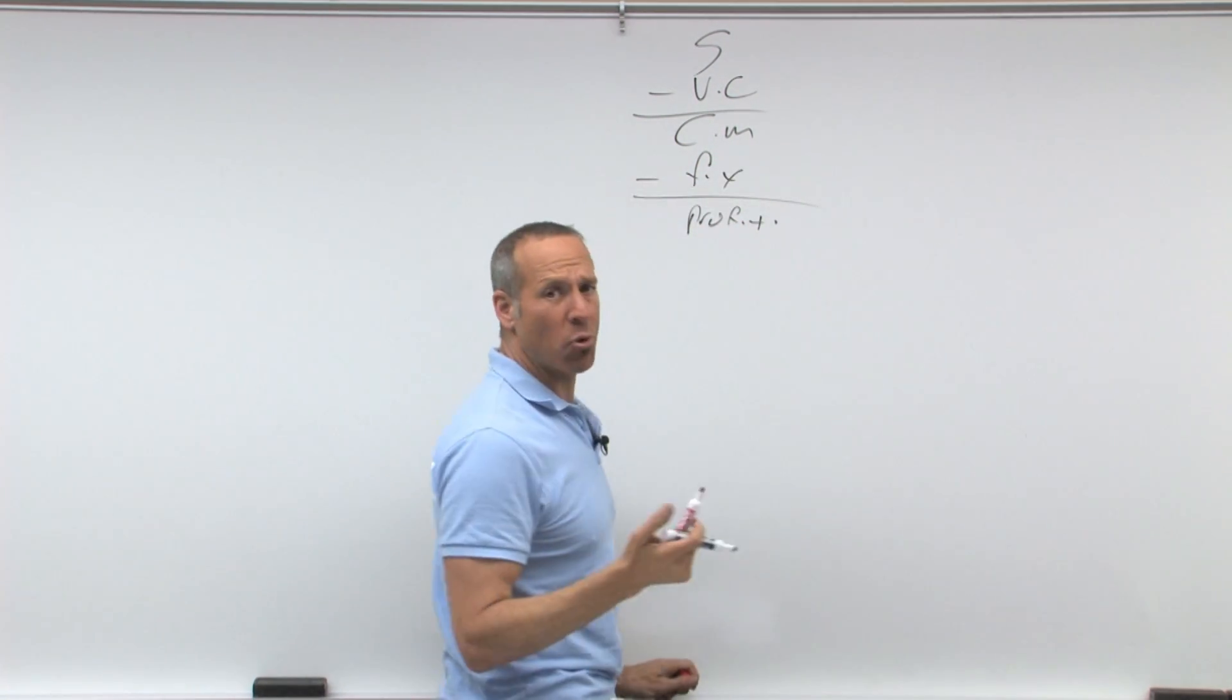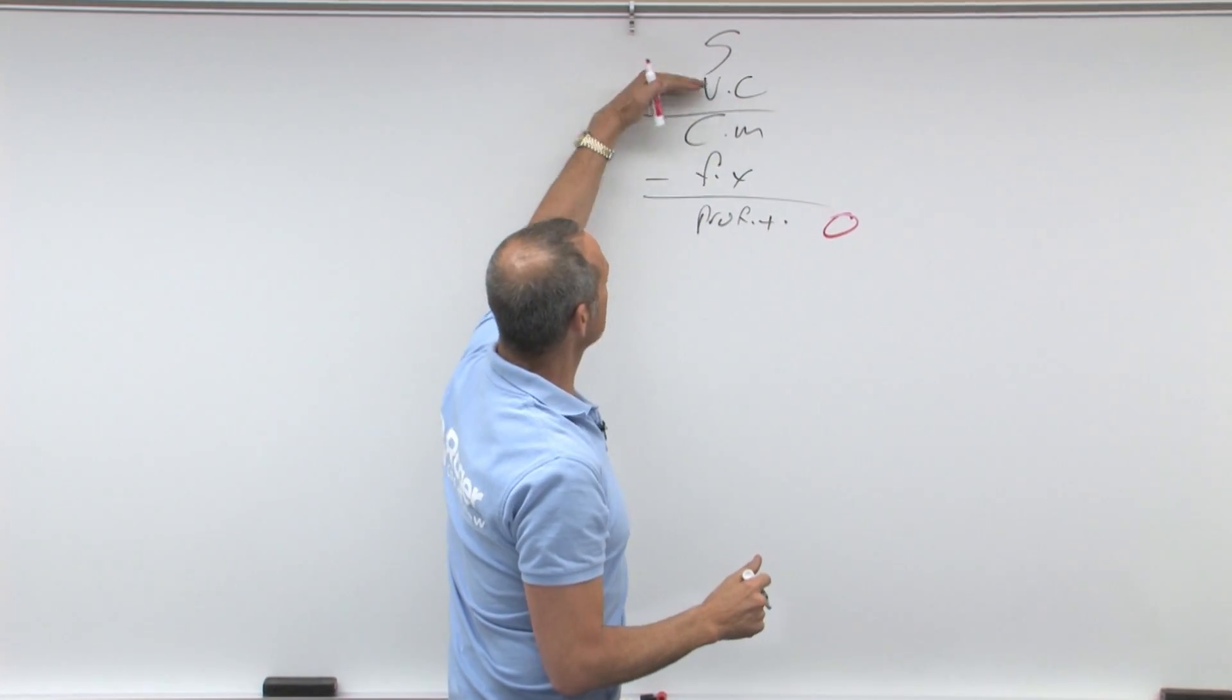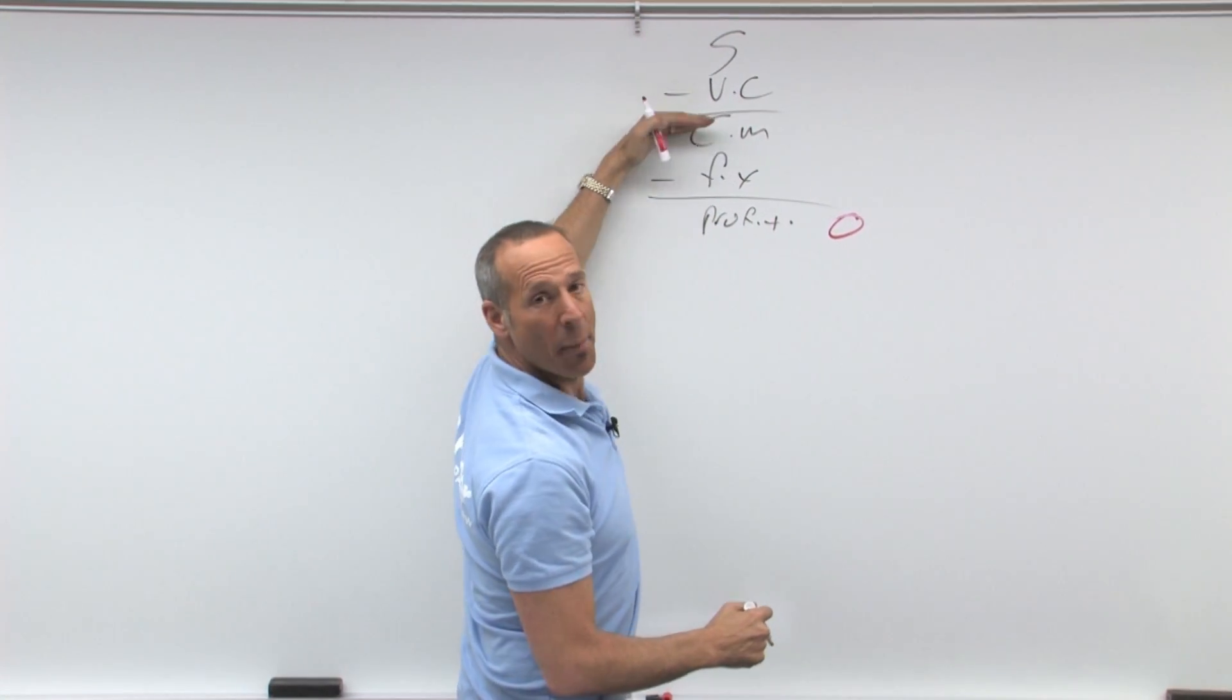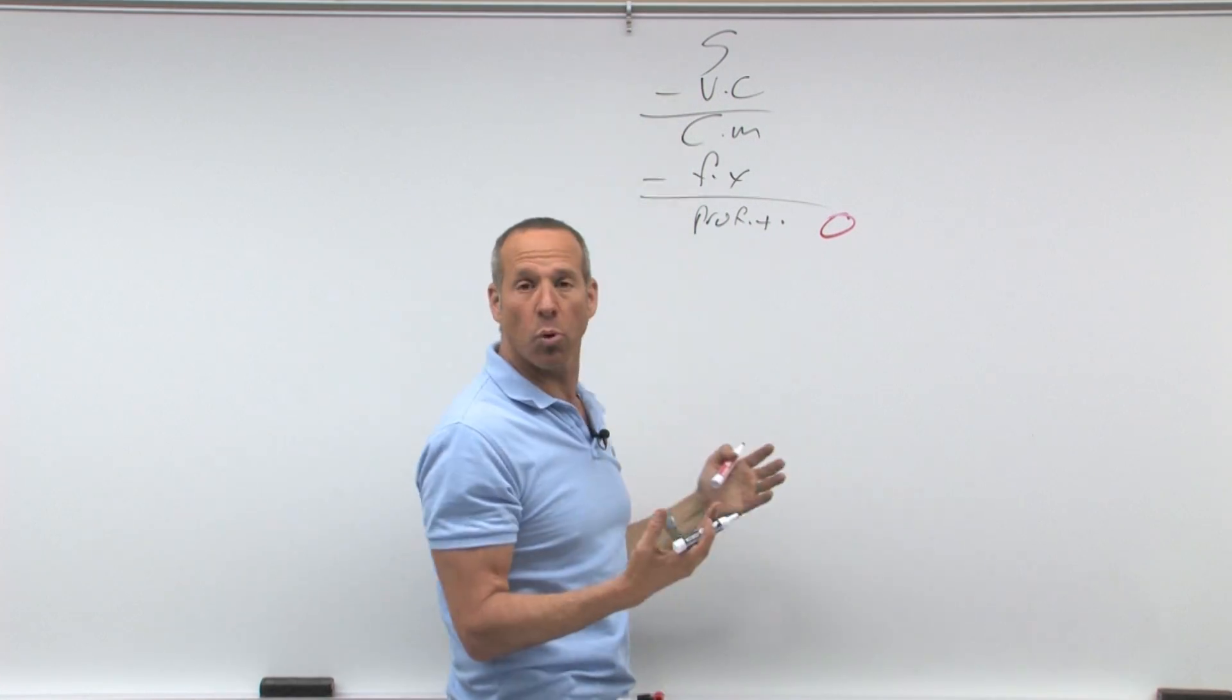Now, if we're trying to breakeven, profit is zero, right? So that means sales minus variable cost is contribution margin. That means contribution margin equals fixed cost equals zero. That's what we're looking at.